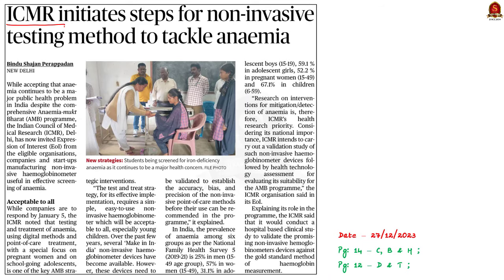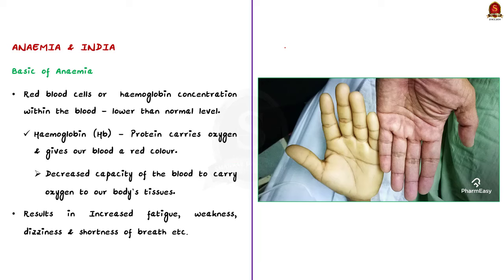Look at this news article — the Indian Council of Medical Research has invited expressions of interest from eligible organizations to manufacture non-invasive hemoglobinometers, which are devices used to check hemoglobin in blood and screen for anemia. In our analysis, let us see about anemia from a prelims perspective. Anemia is a condition in which the number of red blood cells or hemoglobin concentration is lower than normal. Hemoglobin is a protein that carries oxygen in the body and gives blood its red color. Decreased hemoglobin leads to decreased capacity of blood to carry oxygen to body tissues, resulting in increased fatigue, weakness, dizziness, and shortness of breath.